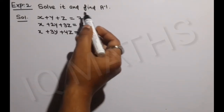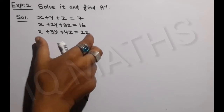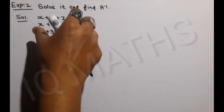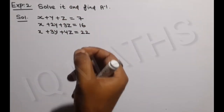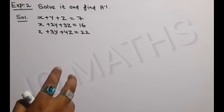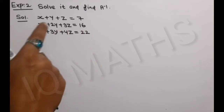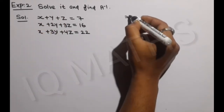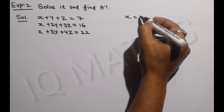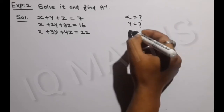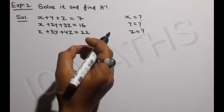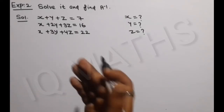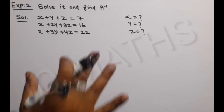तो बच्चो statement है कि: solve it and find A inverse. यहाँ पर हमें equation type दी हुई है, एक form में तीन equation हमें दी हुई है - इसको हम equation नहीं कहेंगे क्योंकि यह combine है, equation जैसी है। हमने इसको solve करना है, मतलब x, y और z की value find करनी है। साथ में A inverse भी find करना है जो हमने पिछली वीडियो में सिखाया था।